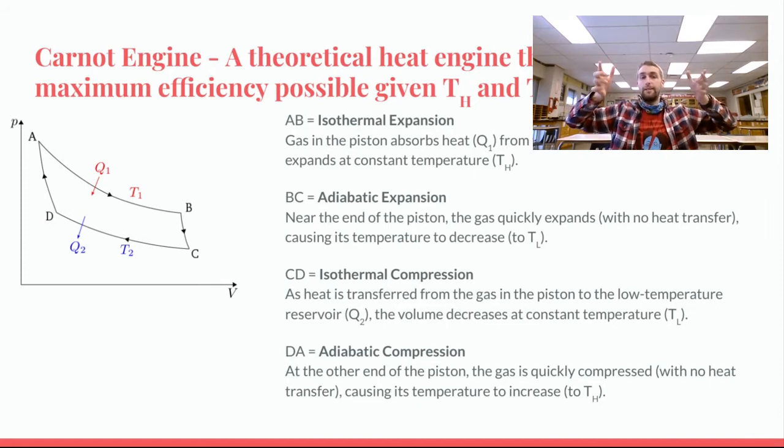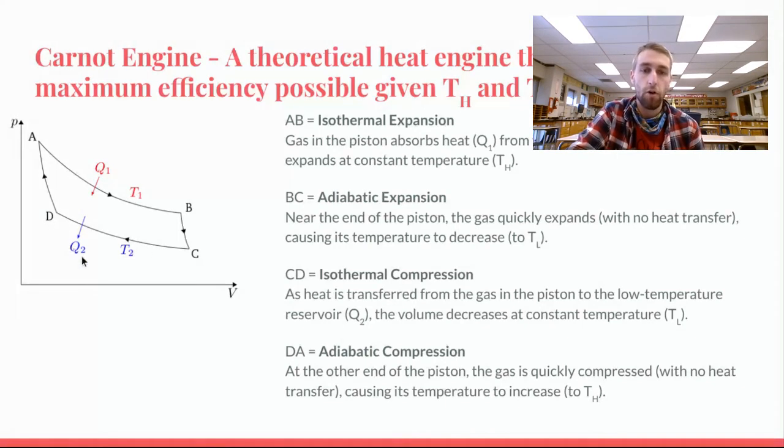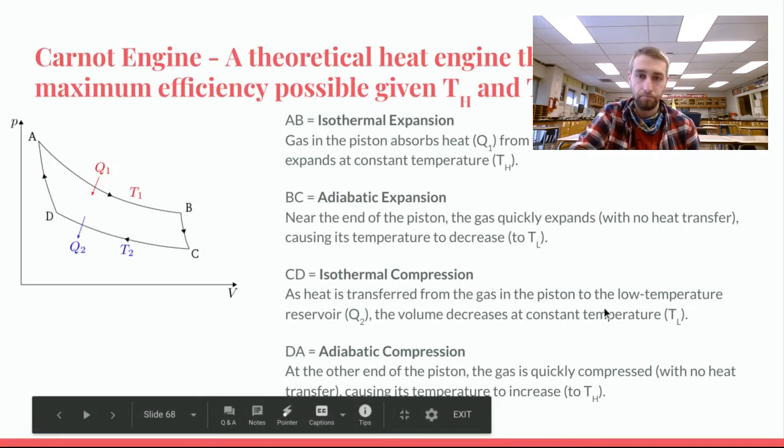Now the piston is at its maximum volume, and it's going to start to compress. The first part of the compression is an isothermal compression. So you can see here, volume is decreasing. Q2 is going out. So that means heat is leaving the system, decreasing at a constant temperature.